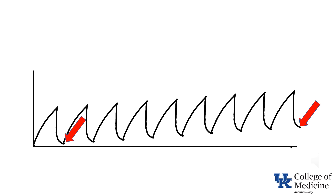The normal FRC is about 30 mL per kg in an adult, or about 2 liters in a 70 kg adult. As a result, with a respiratory rate of 12, retaining only 10 mL per breath would result in a 30% increase in FRC at the end of the first 5 minutes. It wouldn't take long before the intrathoracic pressure would be substantially increased and the physiologic consequences resemble those of a tension pneumothorax.